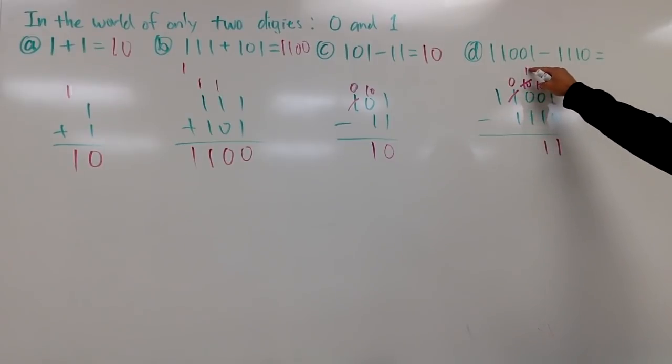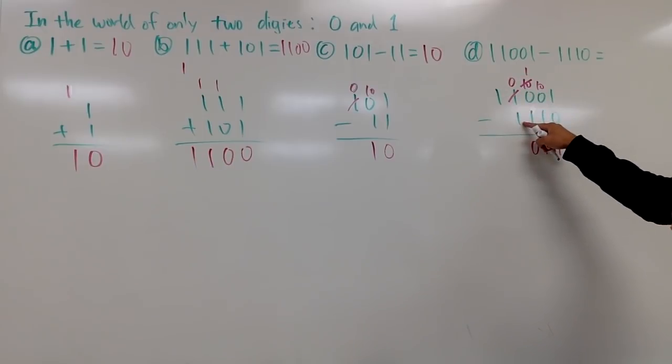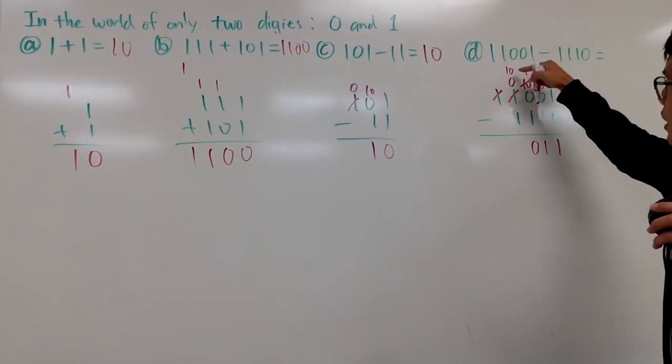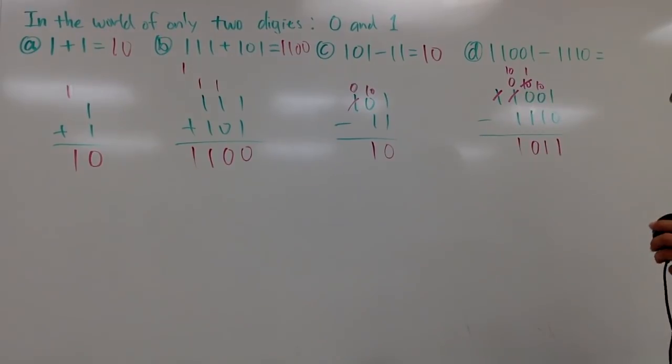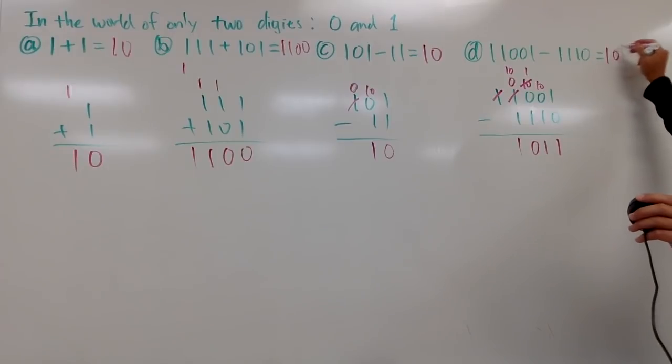And here, we have 1 minus 1, which is 0. And now, this is 0 minus 1, which is no good. I will have to borrow. So get rid of this, and then this becomes 10. 10 minus 1 is 1. Therefore, the answer to this right here is 1011.